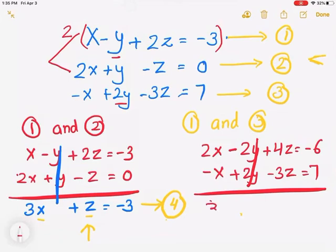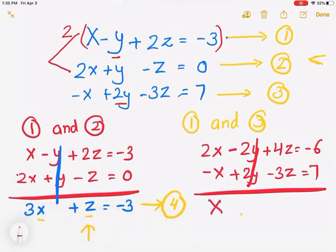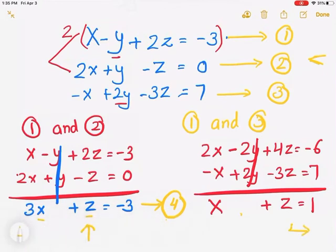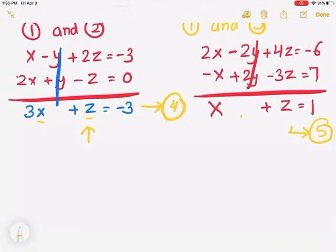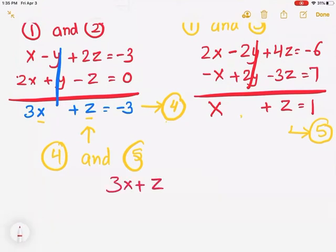Eliminate the y's — always eliminate the same variable as in your first combination. Combine the rest: x plus z equals 1. I'll label this equation 5. Now it's time to combine equations 4 and 5.